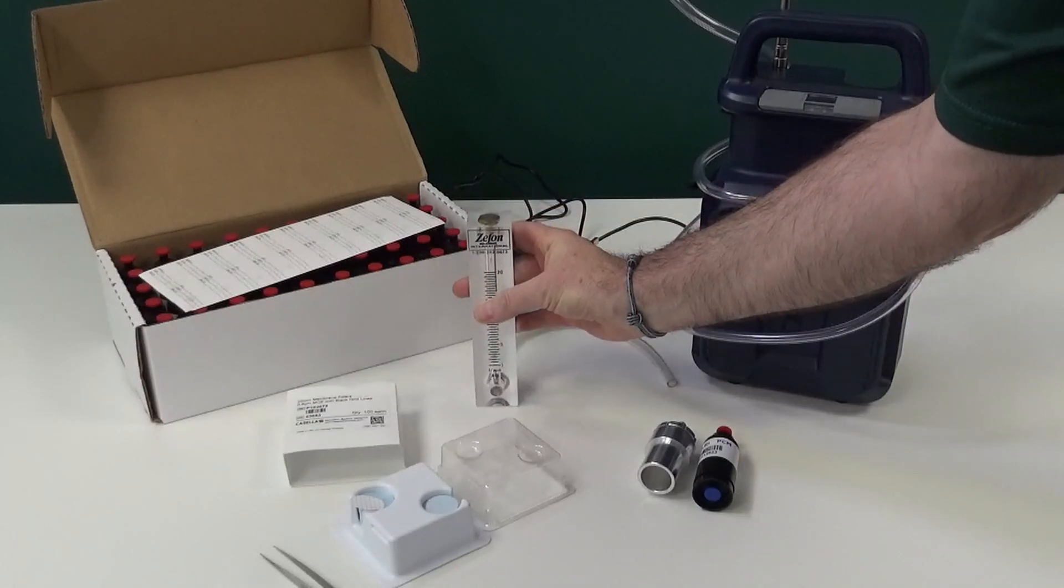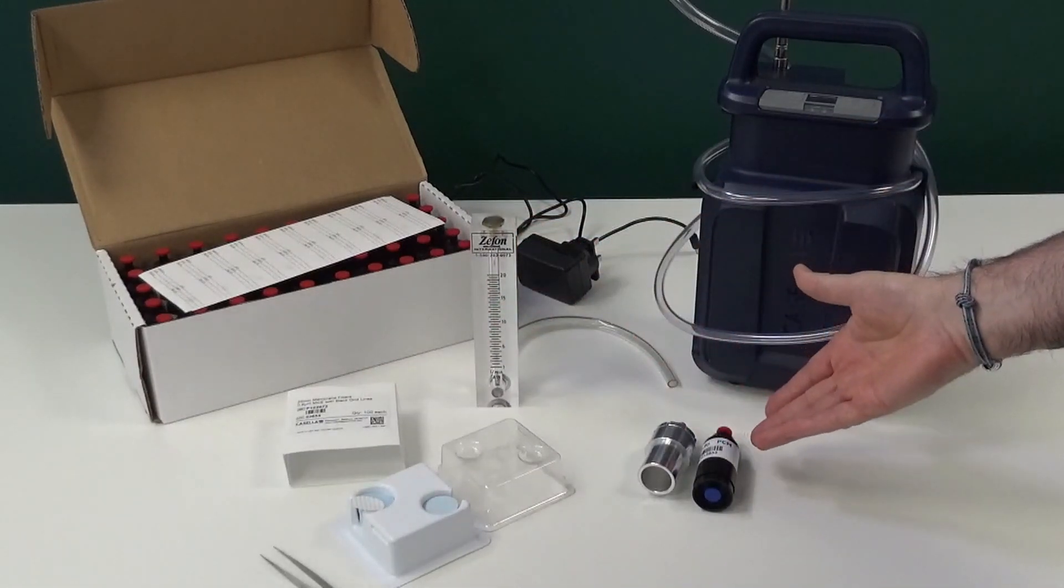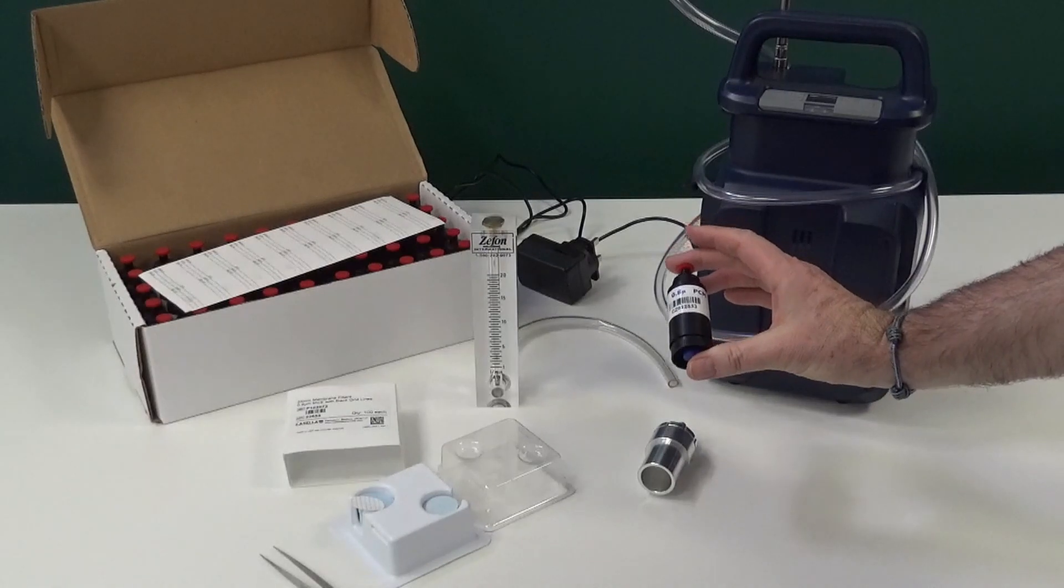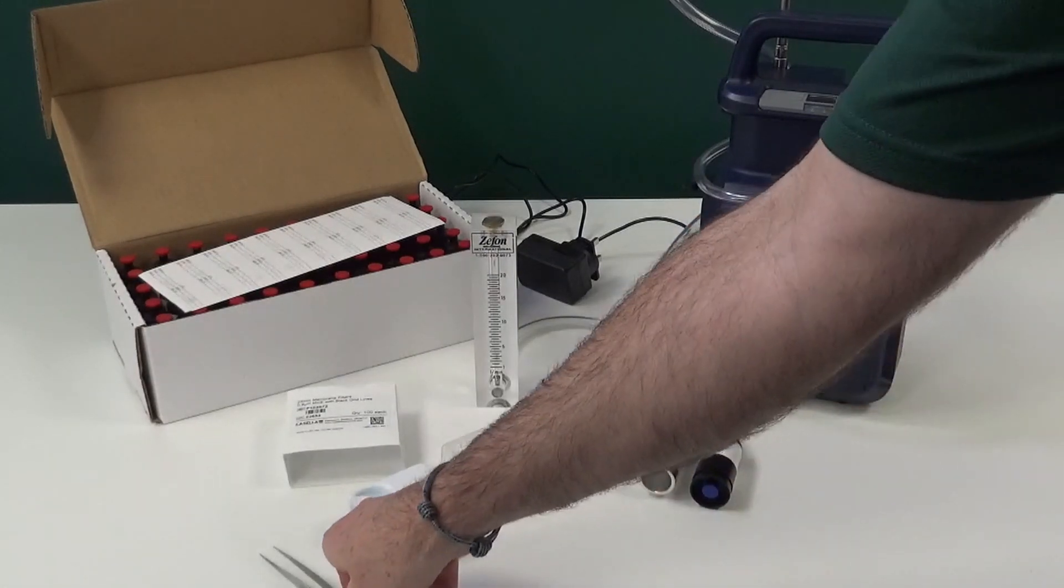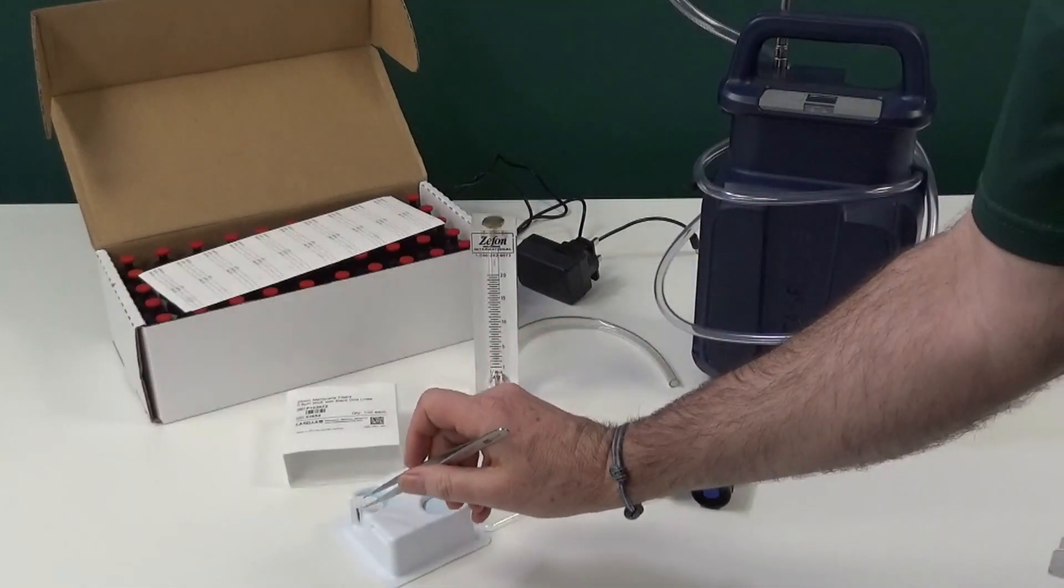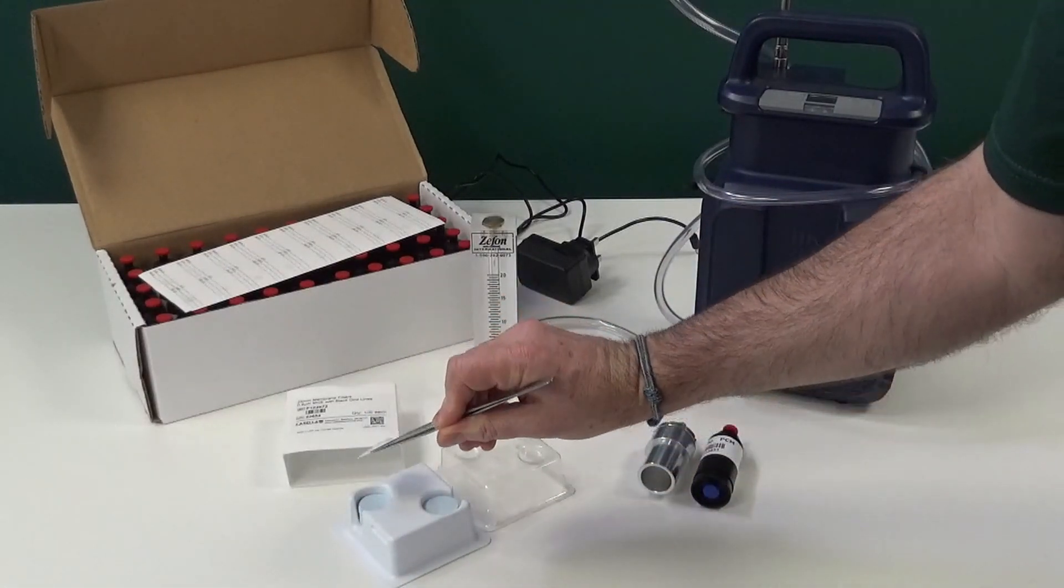There are various sampling heads available. Today we are going to use the asbestos sampling head. Some sampling heads can be purchased with preloaded filters. Finally, if you are loading the filters yourself, you will need filters and tweezers to handle the filters.